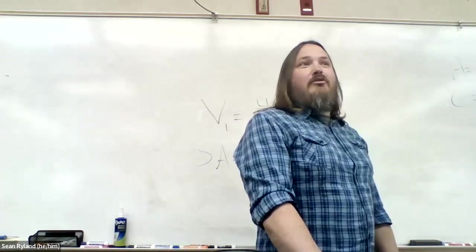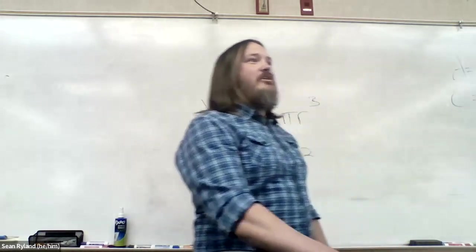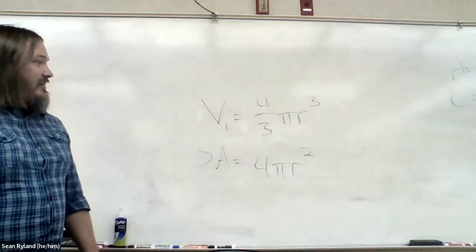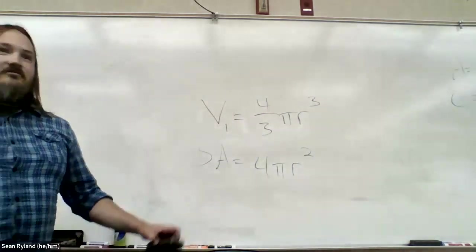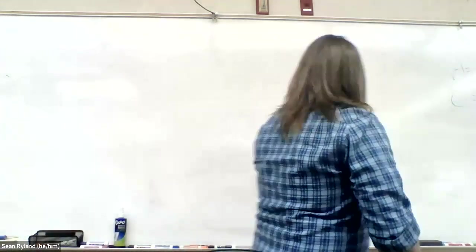So surface area of a sphere is 4 pi r squared. I'm not going to do a proof to show you why that's the case. That's just something that I noticed after years and years of looking up these equations. I eventually realized that connection. I'm sure that there is a mathematical proof to show that, but I don't know it.